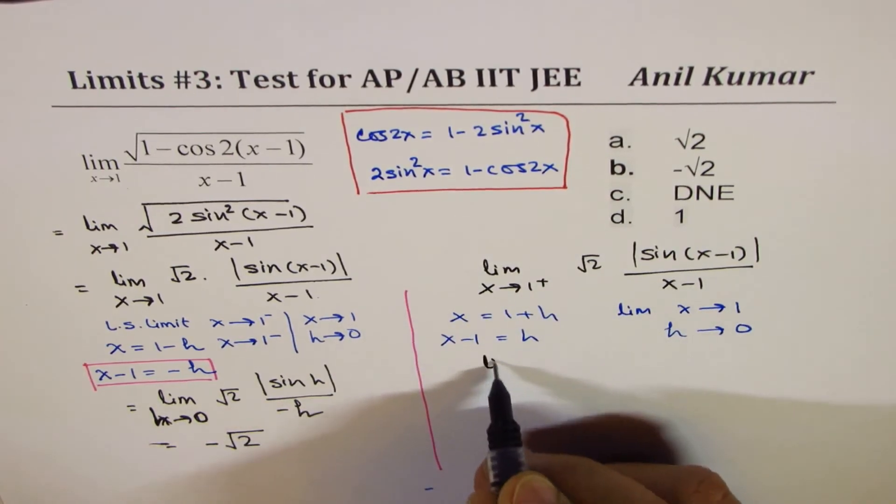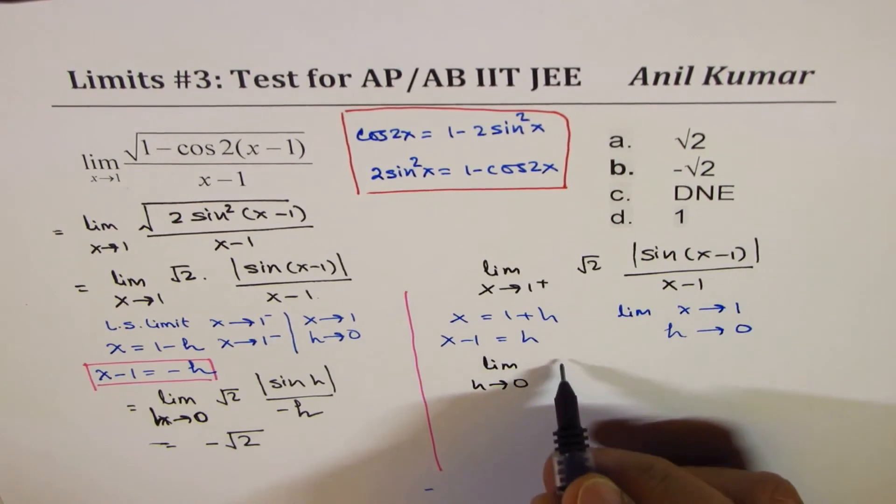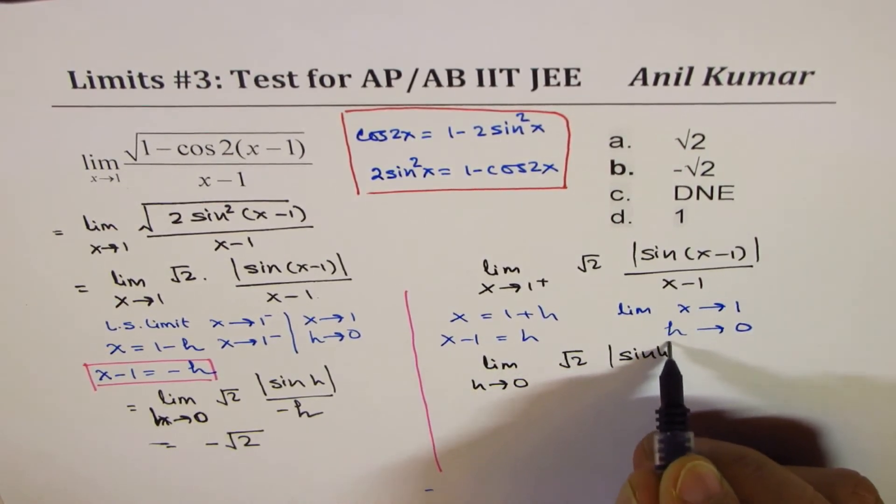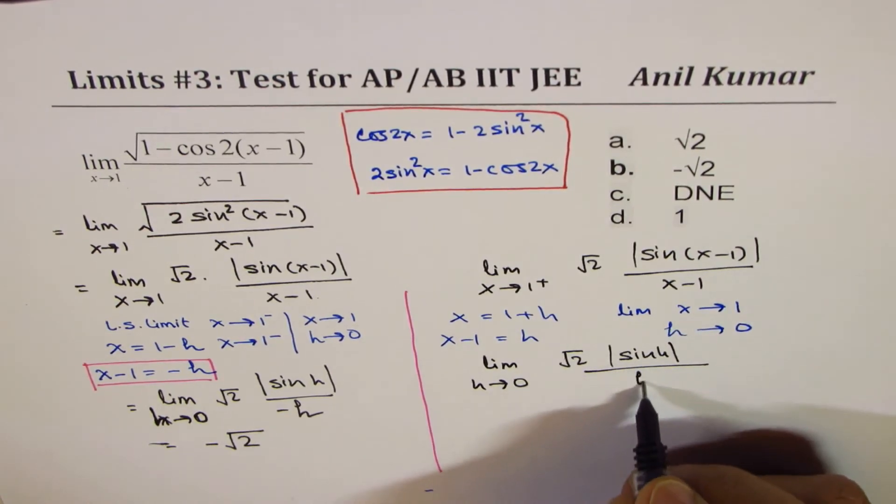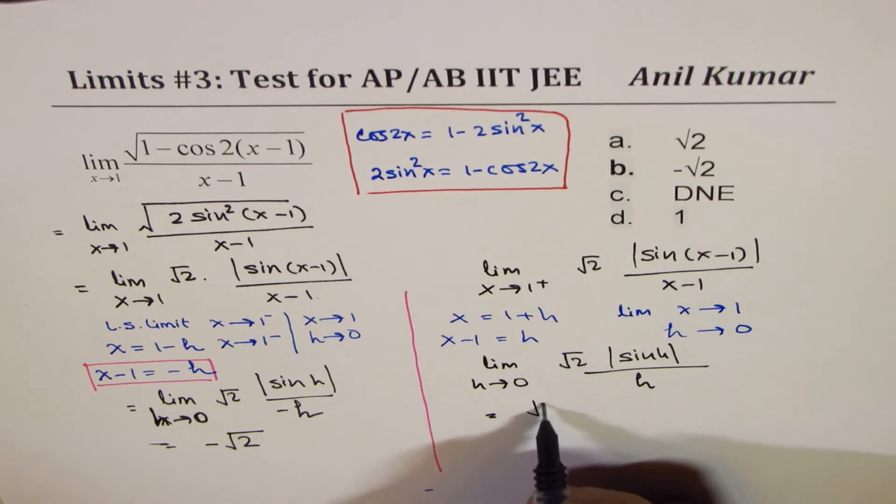And therefore, I could write this as limit h approaches 0. This is for the right side limit. Square root 2, absolute value of sine h over h, but positive this time. And this limit is square root 2.